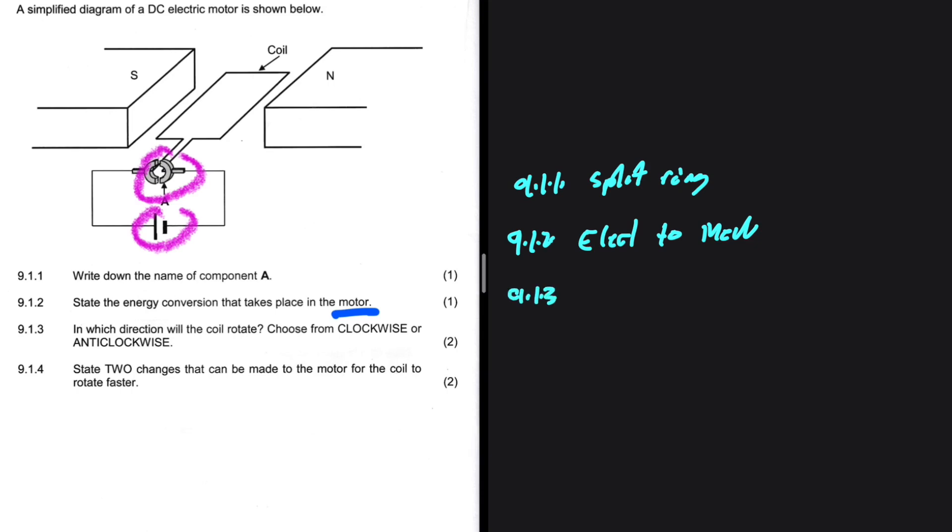9.1.3, in which direction will the coil rotate? Choose from clockwise or anti-clockwise. Well, explaining this will be very difficult because you cannot see my hand, obviously. This is a motor.